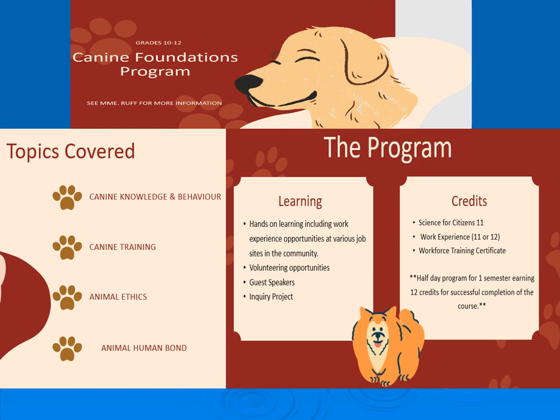GW Graham is offering a K9 Foundations program. Learning includes hands-on experience, work experience opportunities at various job sites in the community, volunteering opportunities, guest speakers, and an in-career project. Students will get credits for Science for Citizens 11, Work Experience 11 or 12, and a Workforce Training Certificate. This is a half-day program for one semester, and students will earn 12 credits for successful completion of the program.